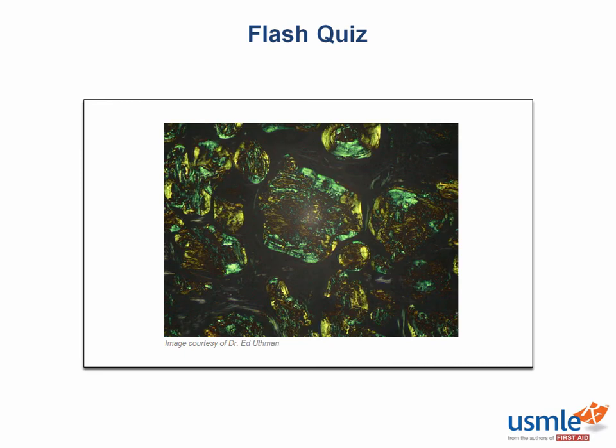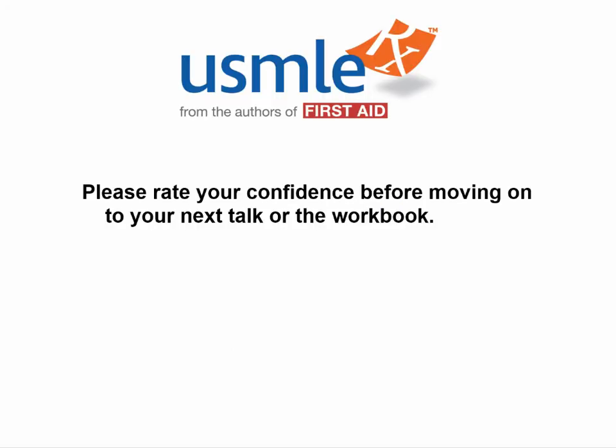An excess of inflammatory acute phase reactant proteins, such as antibodies, fibrinogen, etc., can accumulate over time under chronic inflammatory conditions and lead to this disease. Do you know what's shown here? This is a Congo red stain showing apple green birefringence. What is the disease? That's right — this is amyloidosis. We'll discuss this more in the amyloidosis video.